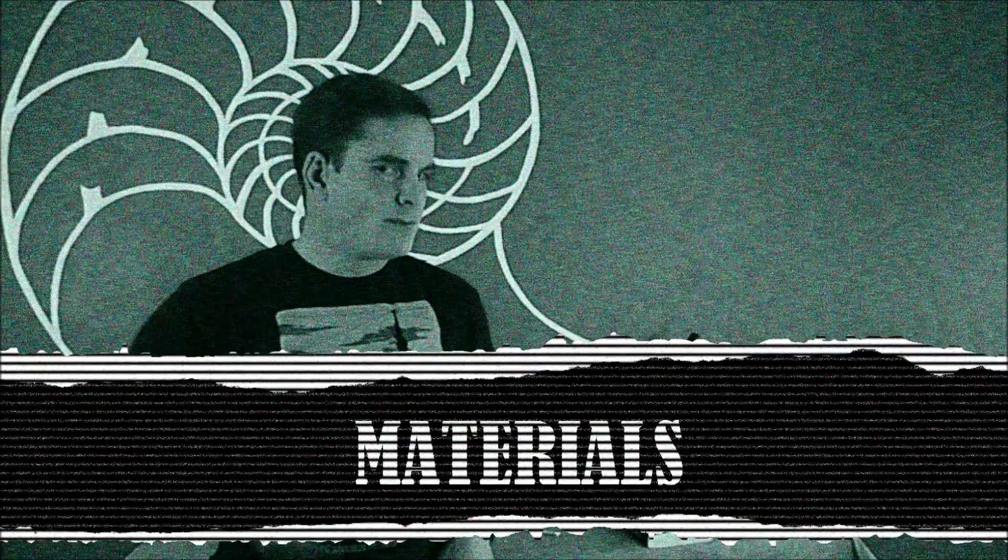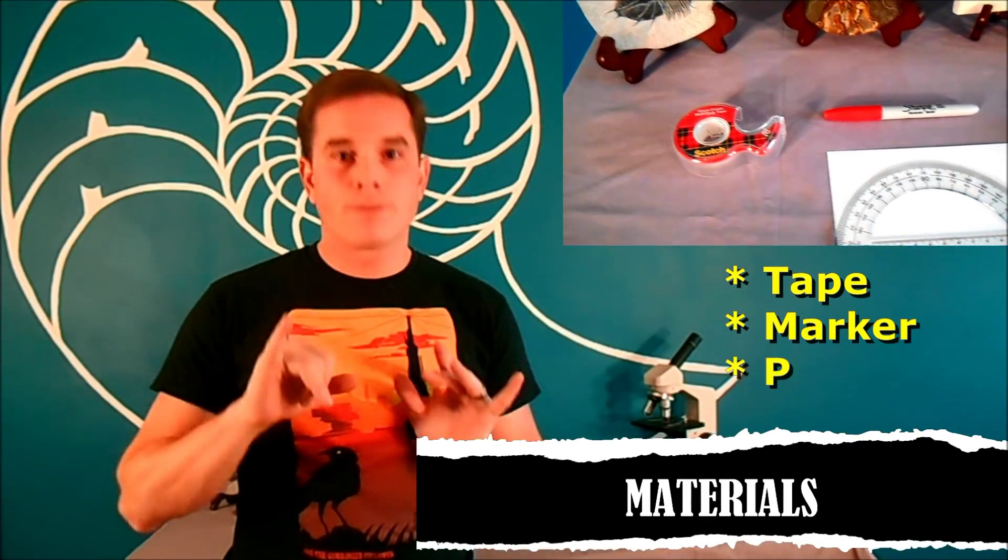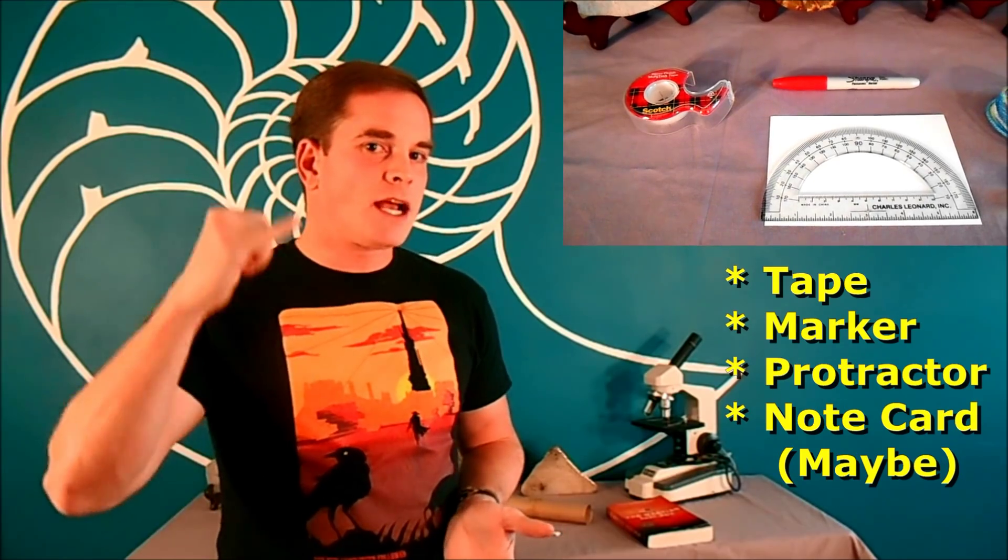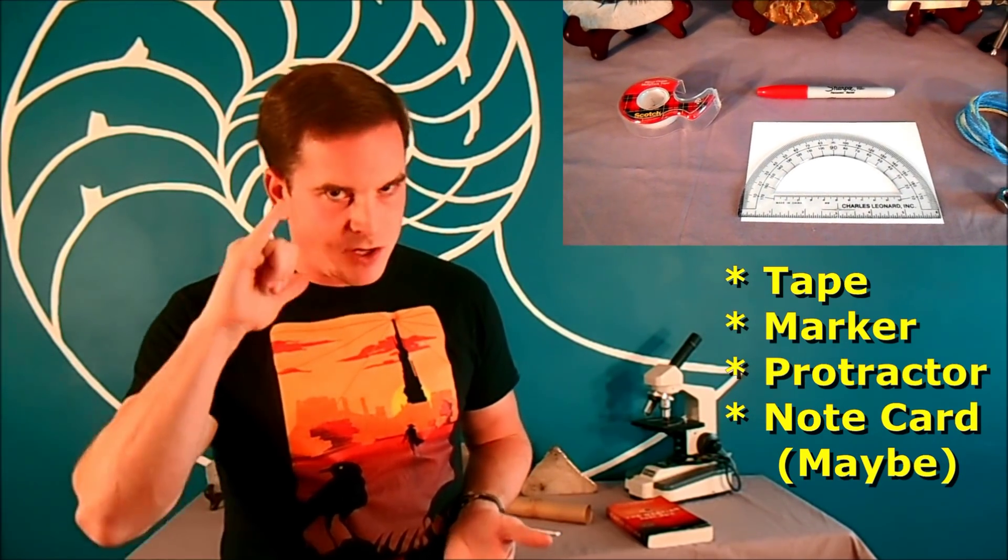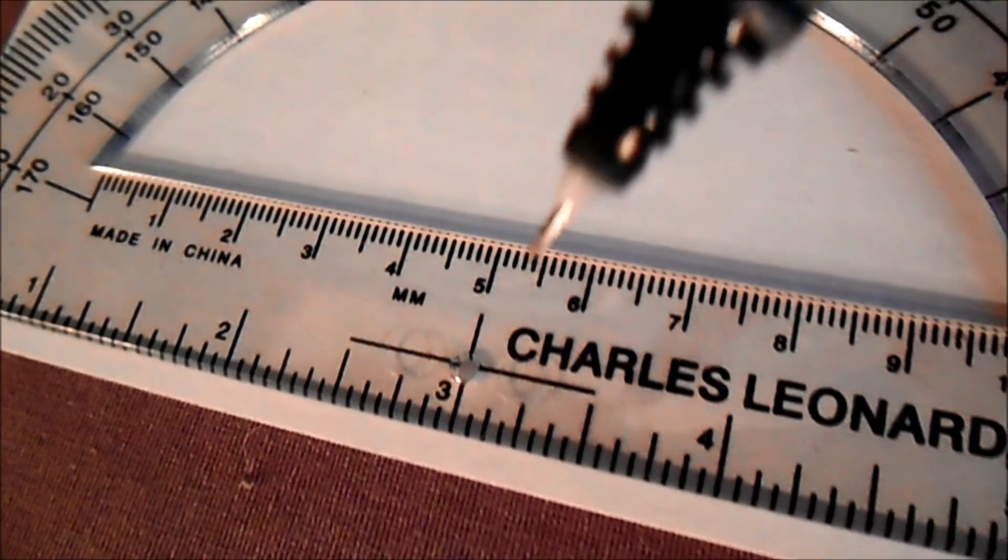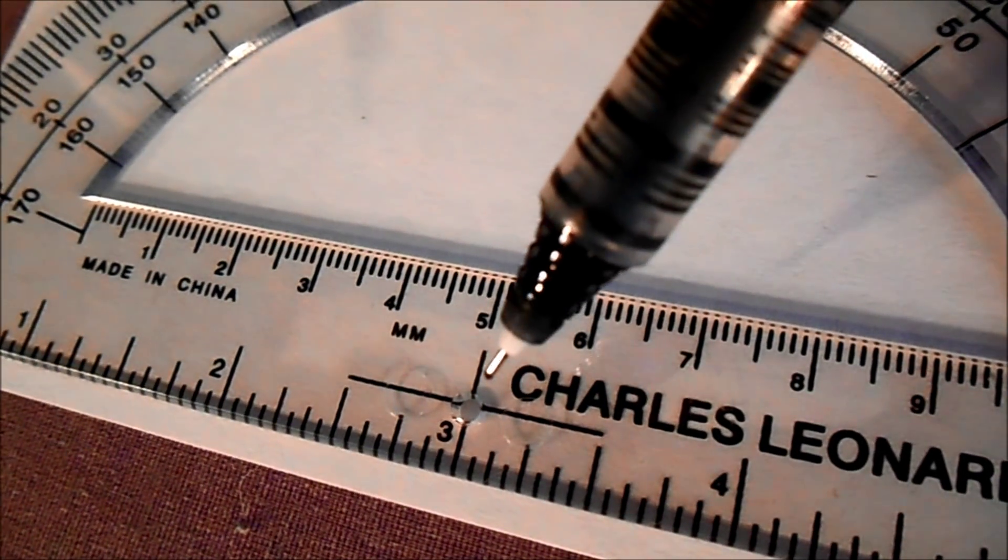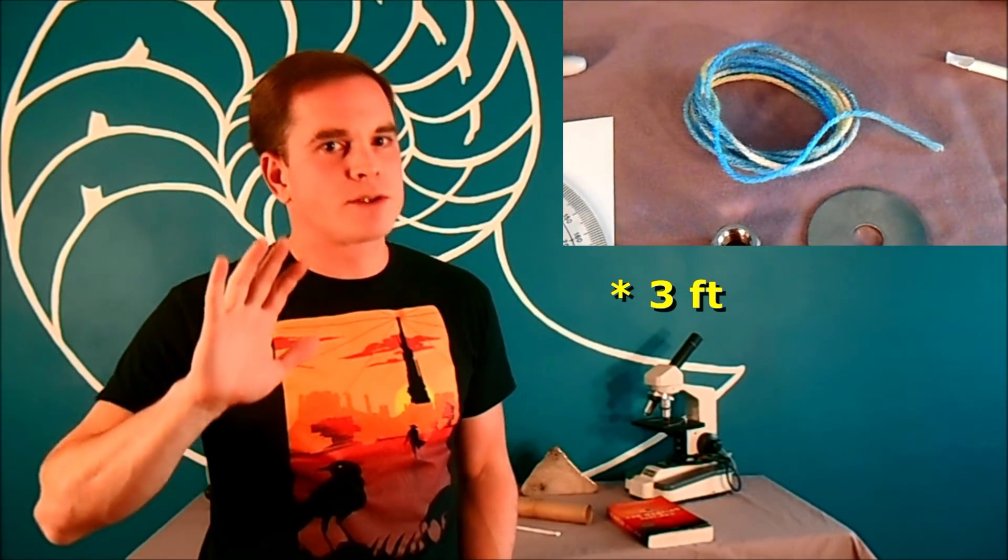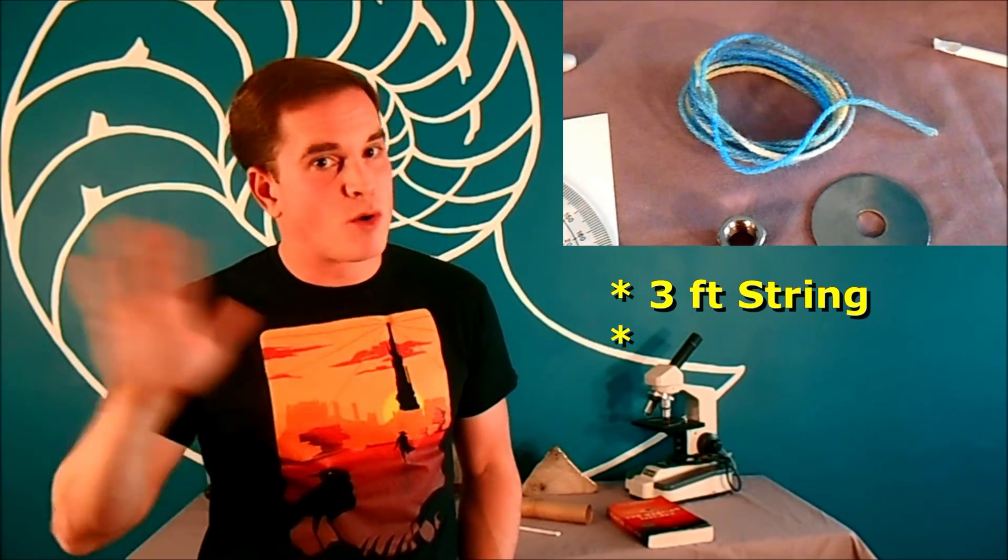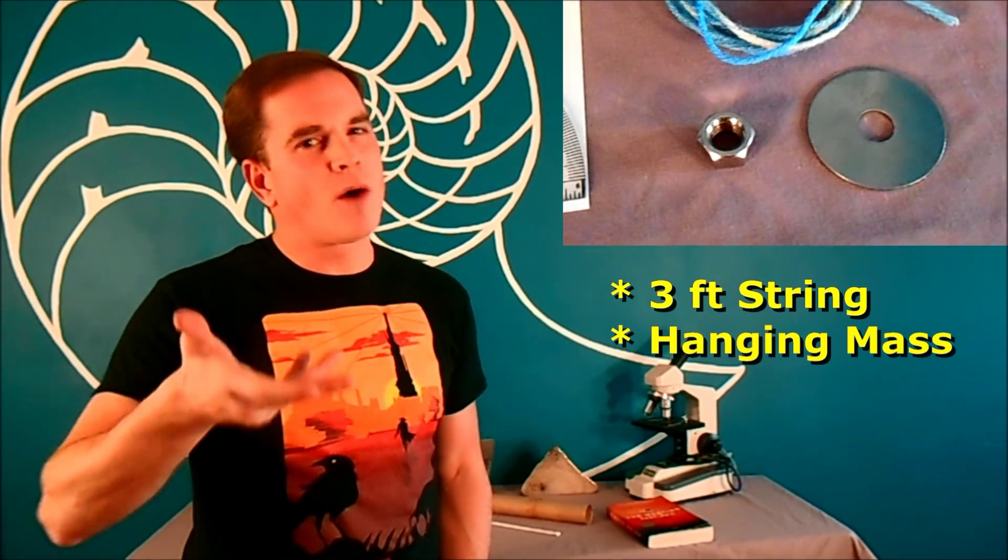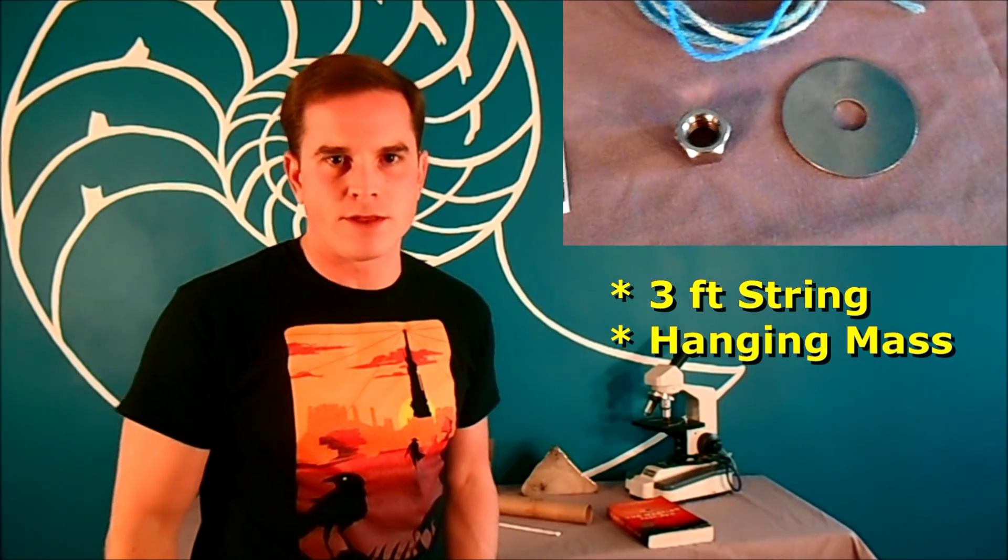You're going to need tape, something to mark with, and something that measures angles. The cheapest, easiest thing is a protractor. If you get a clear protractor like I have, you're going to want a note card as well that's larger than the protractor. It also really helps if your protractor has one of those little holes in the center. You're going to need a length of string—three feet is probably more than enough for anybody. You're going to need a mass that can hang from that string, like a washer or a large hex nut.